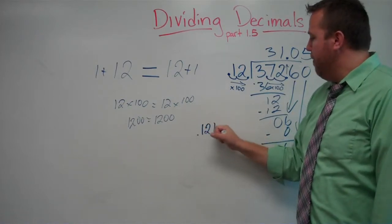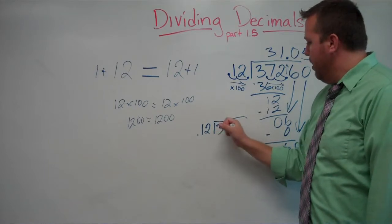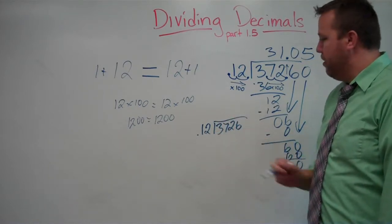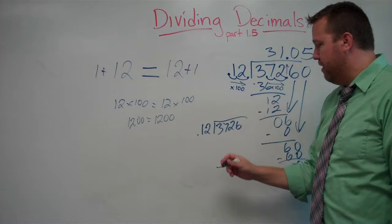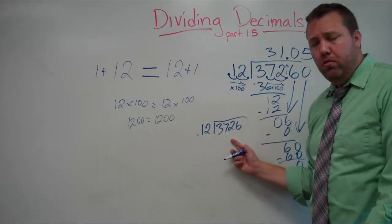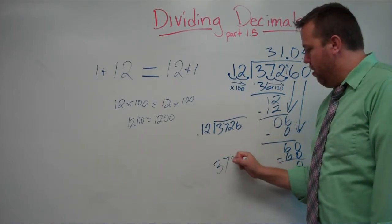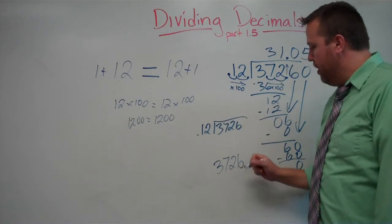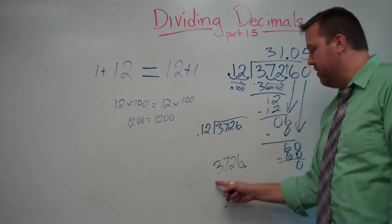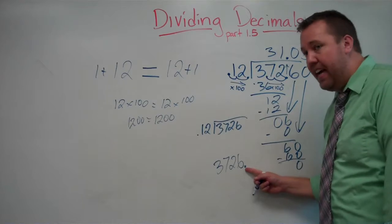You might be asking, what if it's a whole number and we're moving that decimal, every whole number has a decimal right after the whole number. This is 3,726. This is 3,726 and nothing.